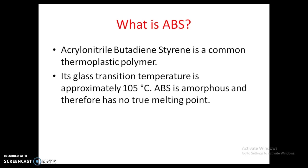Another thing I want to tell you: how ABS is made. ABS is made through the process of polymerization. Polymerization means linkage of different monomers together to form a long polymer chain. ABS also has three monomers. Later I will tell you what these three monomers are.